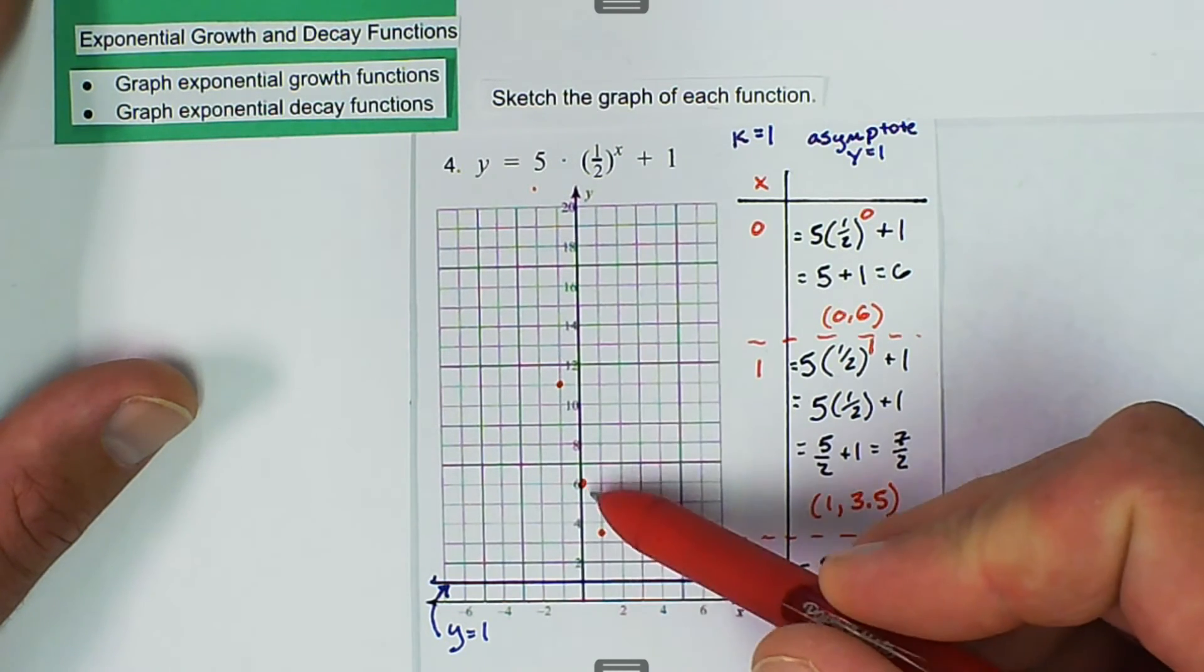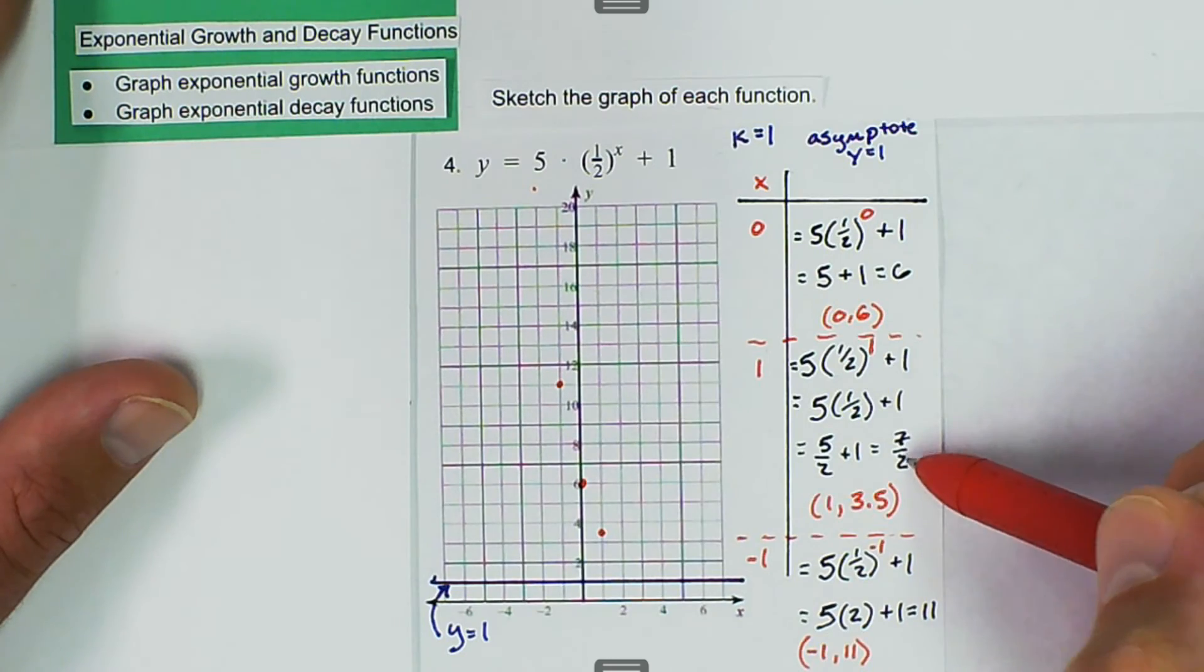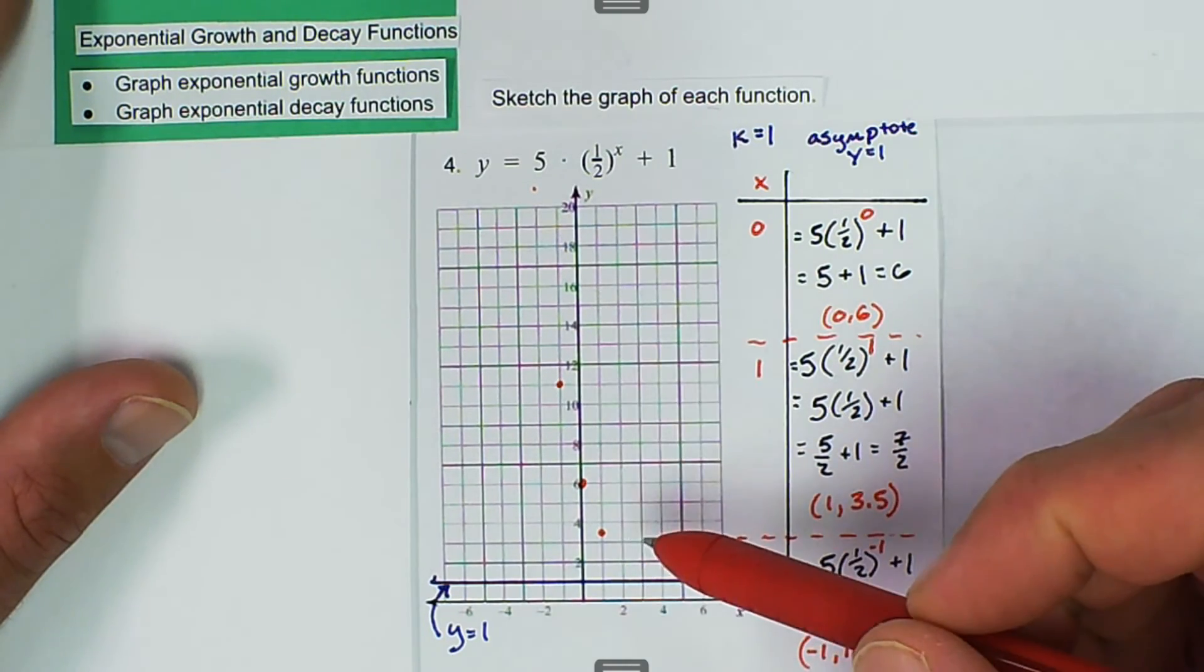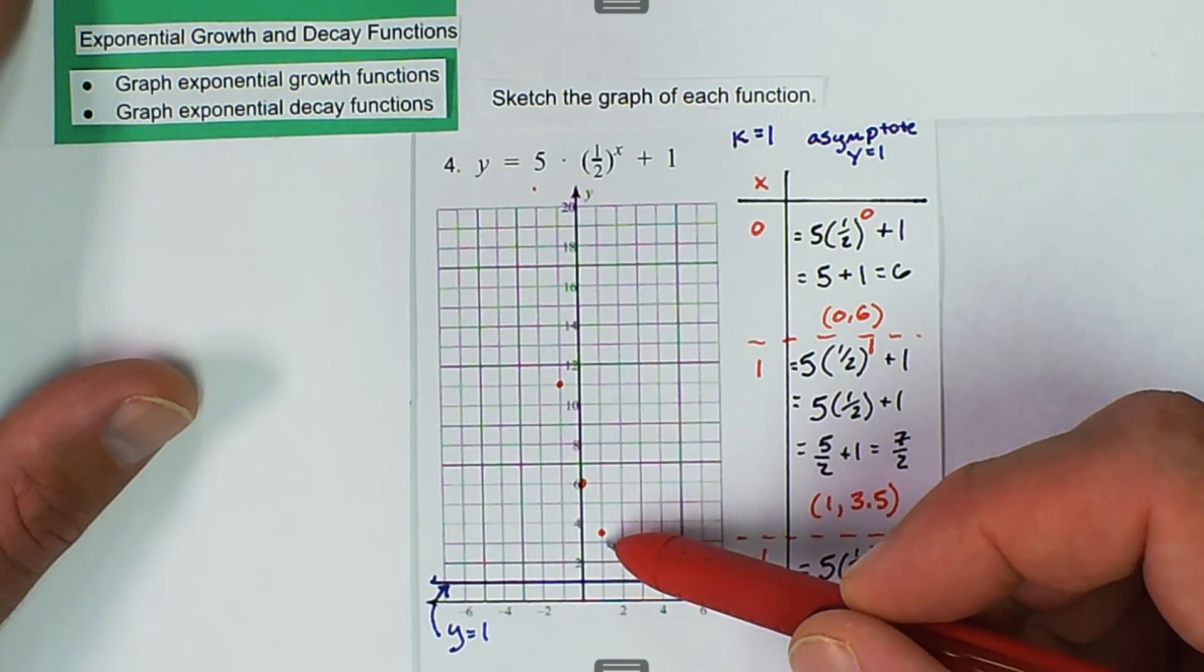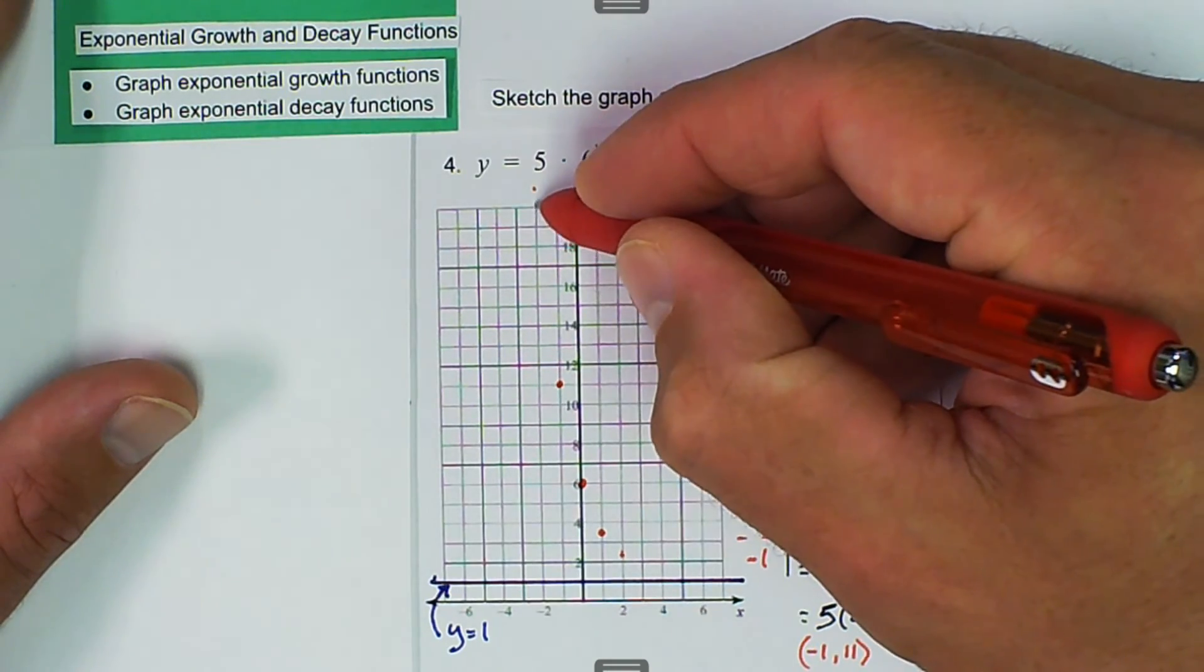And if we cut this one in half, so this one goes down 2.5. And then we're going to go down half again. So it was 7.5, so it's going to be around there.